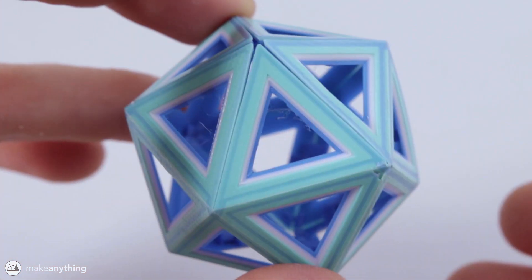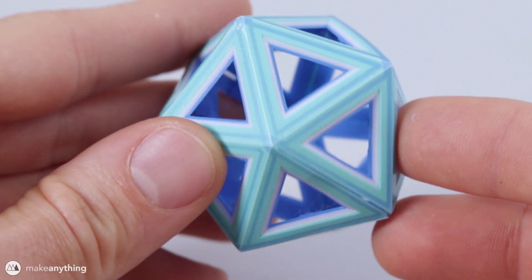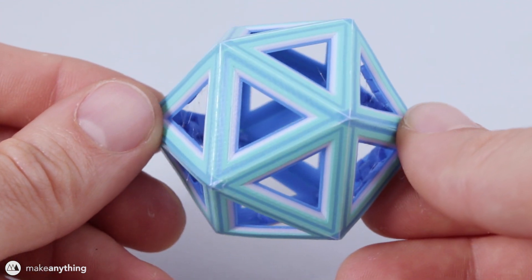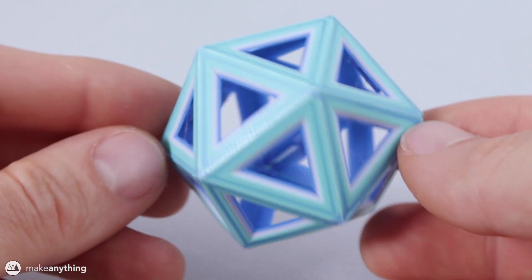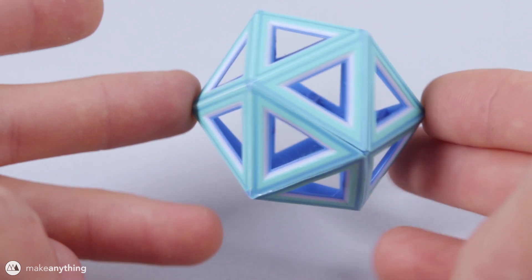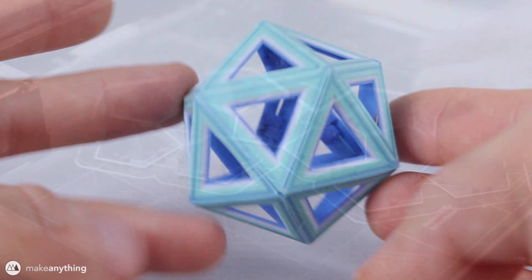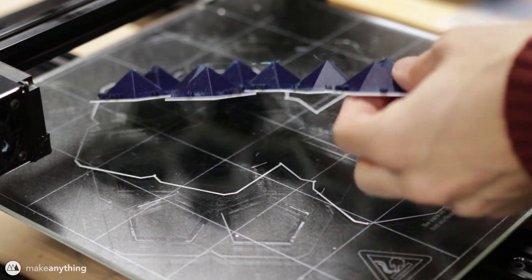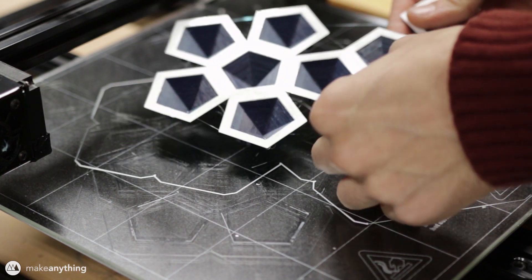Of all the shapes I modeled though my favorite has to be the icosahedron. It's just got this really pleasant shape and it's made up of all these equilateral triangles. Now that I have a good handful of models for all these basic polyhedra it's not too difficult for me to make little changes that end up creating drastically different looking models in the end.